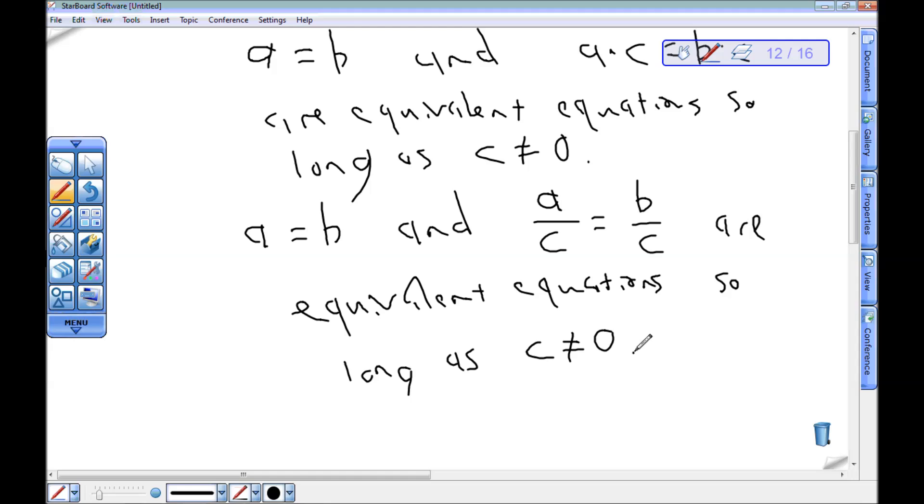Here, we don't only lose our equivalent equations by dividing by zero, we can't do it. It's naughty, it's bad. But we can divide both sides of an equation by any non-zero real number and still have equivalent equations.